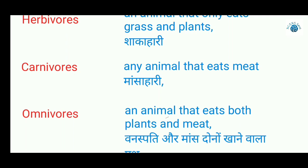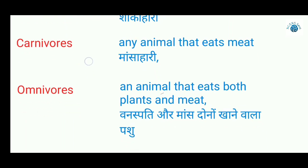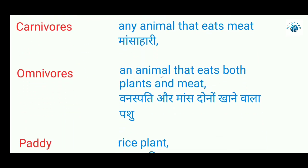Carnivores in Hindi means maansahari — those who hunt and eat other animals. Omnivores are animals that eat both plants and meat. Examples are dogs and humans — we eat both. In Hindi, the meaning is vanaspati aur maas dono khaane waala, also called sarvahari.